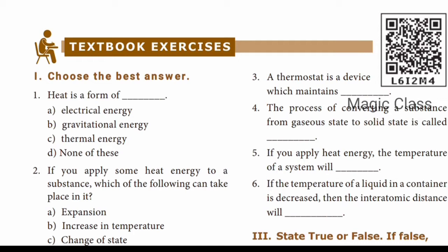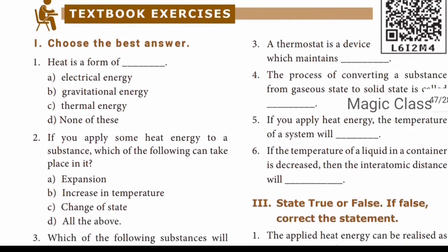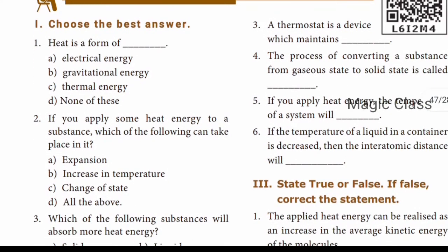Choose the best answer. Question number one: Heat is a form of dash. Heat is a form of thermal energy, so the answer is option C. Question number two: If you apply some heat energy to a substance, which of the following takes place?